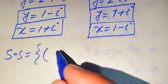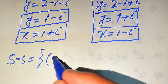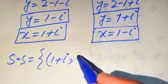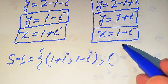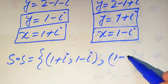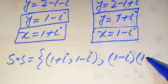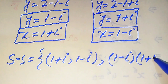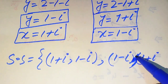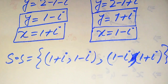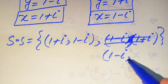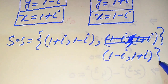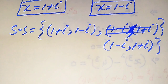The solution sets of the given equation are: first case, x equals 1 plus iota and y equals 1 minus iota; second case, x equals 1 minus iota and y equals 1 plus iota. This is our final answer. Thank you for watching this video, please subscribe to my channel for more exciting videos.